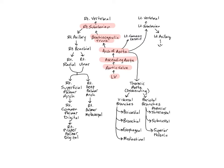The word subclavian means that it's located under the clavicle, and it branches into several arteries at the base of the neck, which go on to supply the area of the right upper arm. The right subclavian branches into the right vertebral artery, which leads into the neck, and then continues on into the region of the axilla, or armpit, as the right axillary artery.